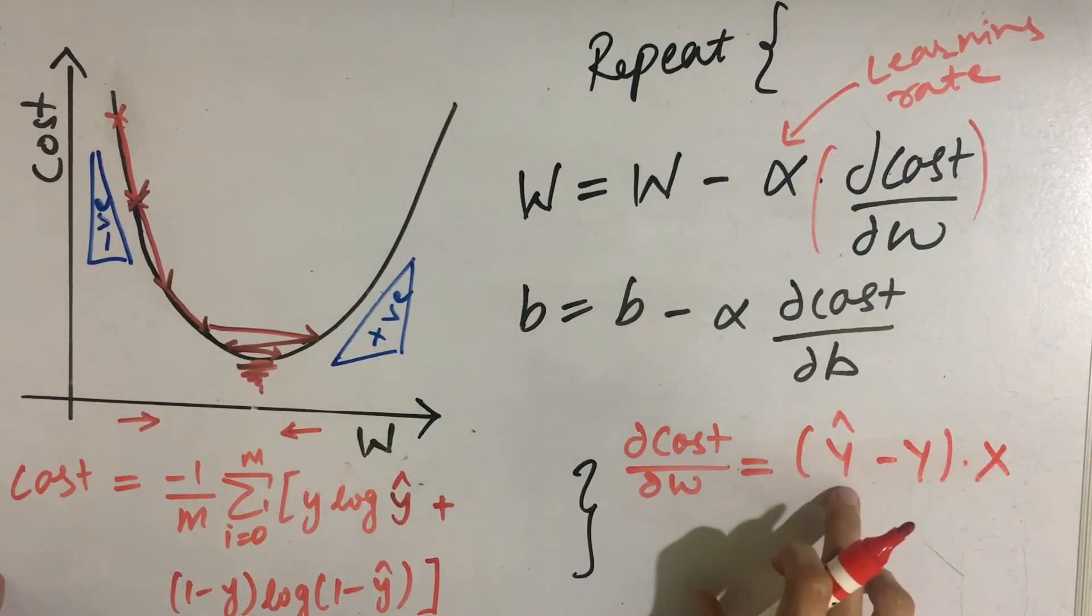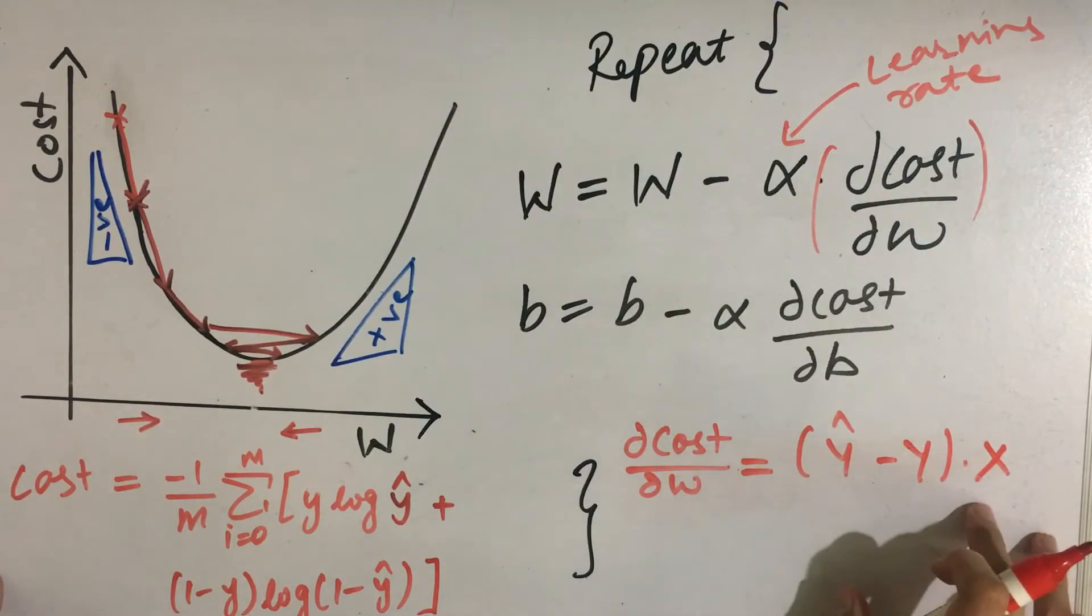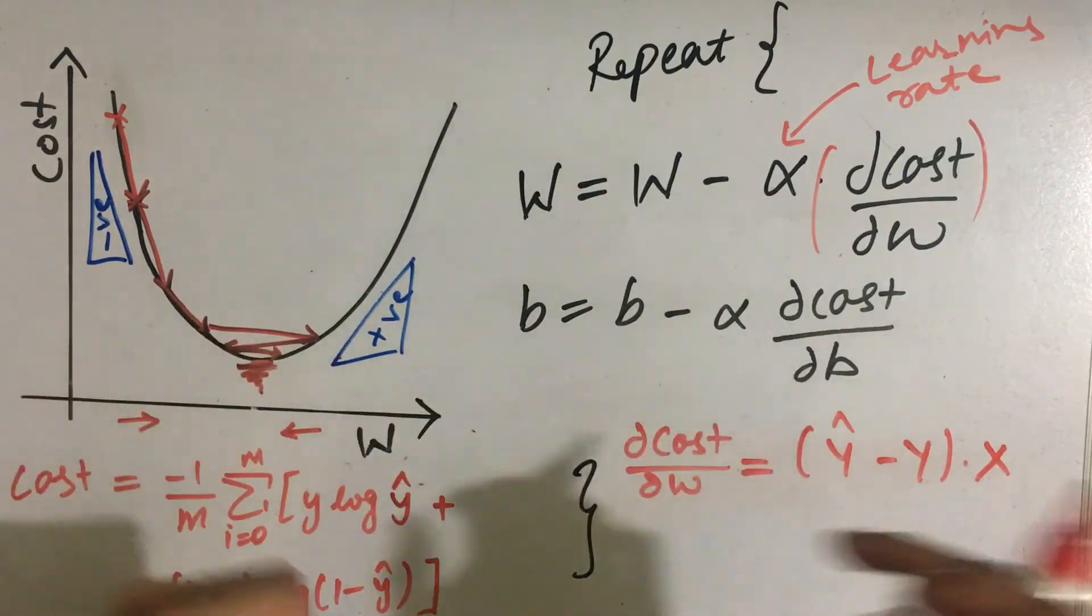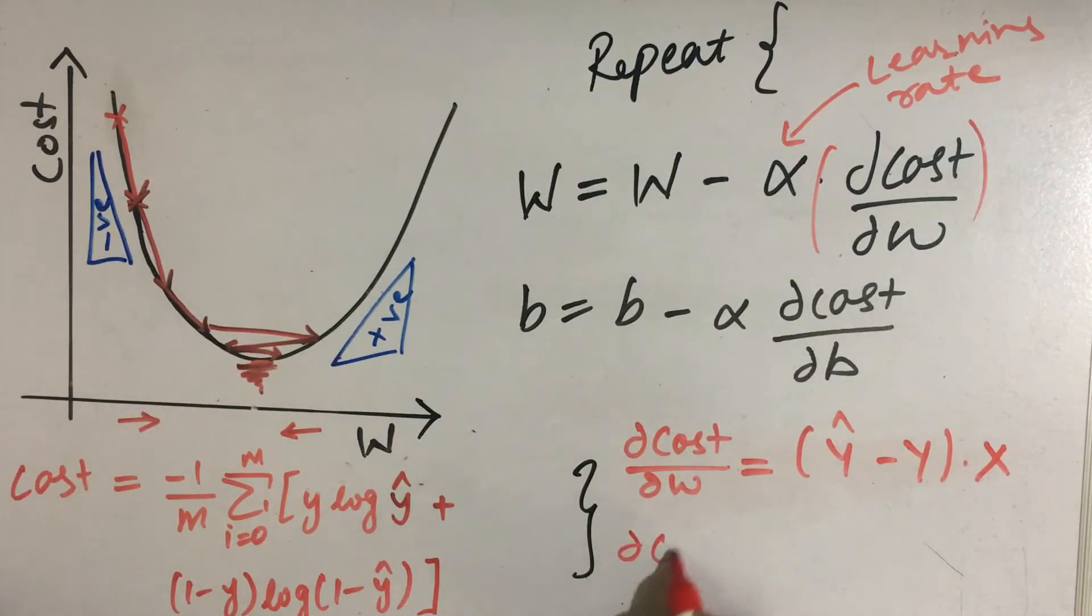So I am representing y hat, y, and x all in the capital form. These are the matrix representation of all the observations. Similarly, del cost by del b will come out to be (y hat minus y).